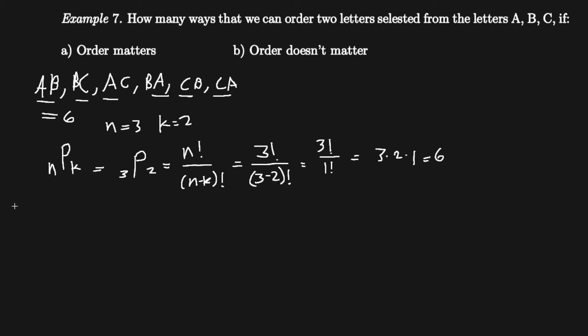That covers part (a). Now we move on to part (b), where order doesn't matter. Here we can only pair up a-b, b-c, and a-c — that's it. That equals 3 different ways, because reordering is not allowed when order doesn't matter.